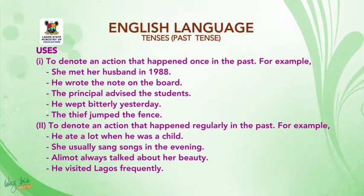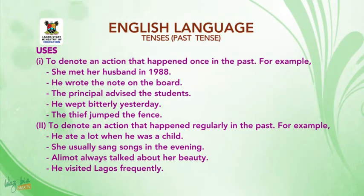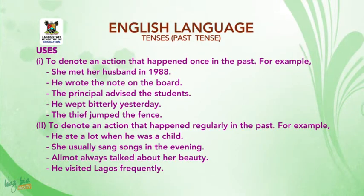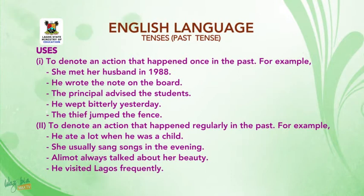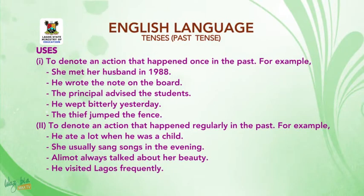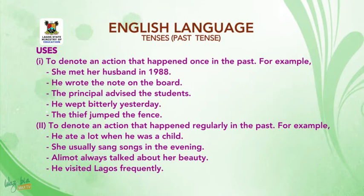2. It can also be used to denote an action that happened regularly in the past. For example: He ate a lot when he was a child. She usually sang songs in the evening. Alimot always talked about her beauty. He visited Lagos frequently.